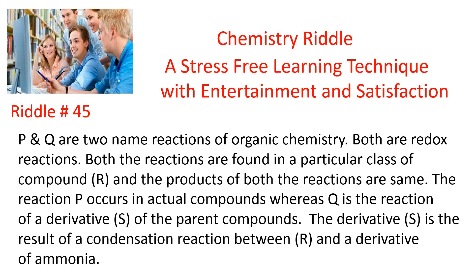Here is riddle number 45: P and Q are two name reactions of organic chemistry. Both are redox reactions. Both reactions are found in a particular class of compounds R, and the products of both reactions are the same. Reaction P occurs in actual compounds whereas Q is the reaction of a derivative S of the parent compounds. The derivative S is the result of a condensation reaction between R and a derivative of ammonia.